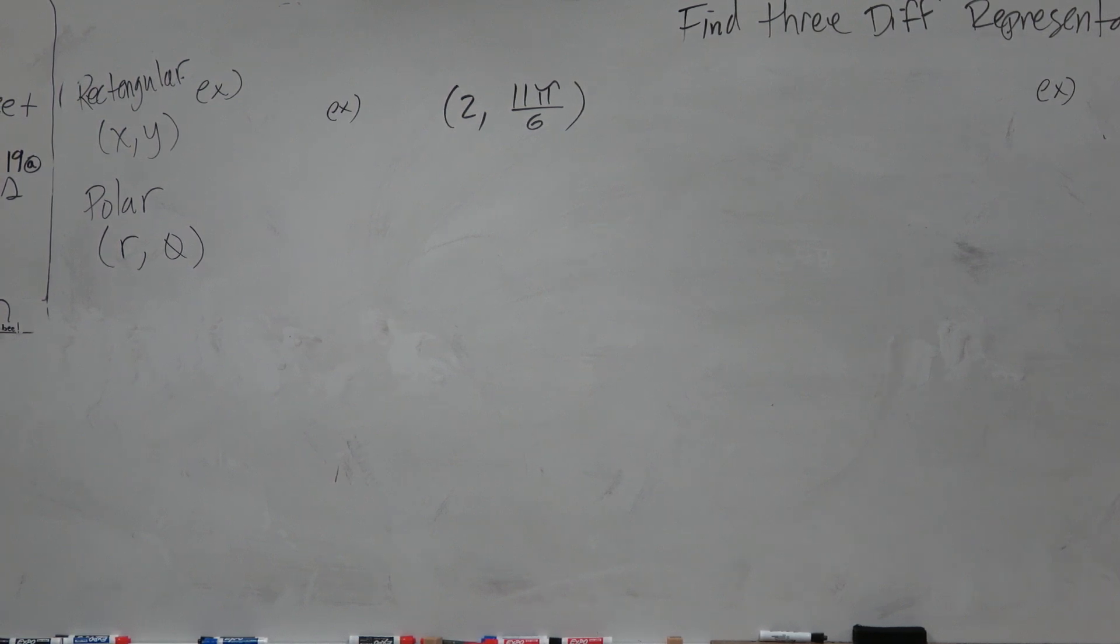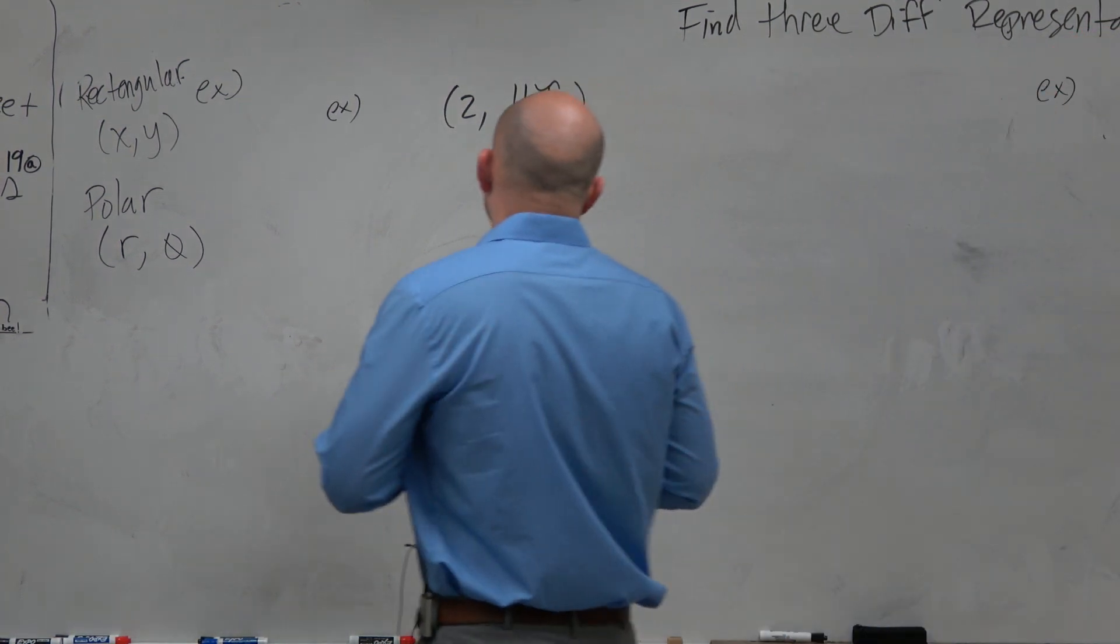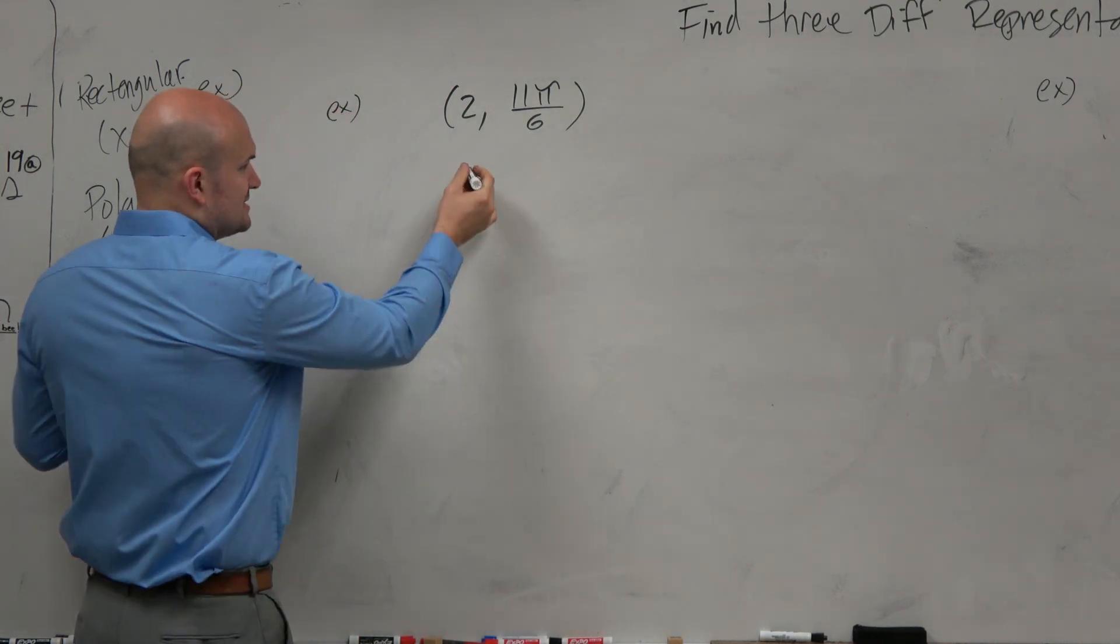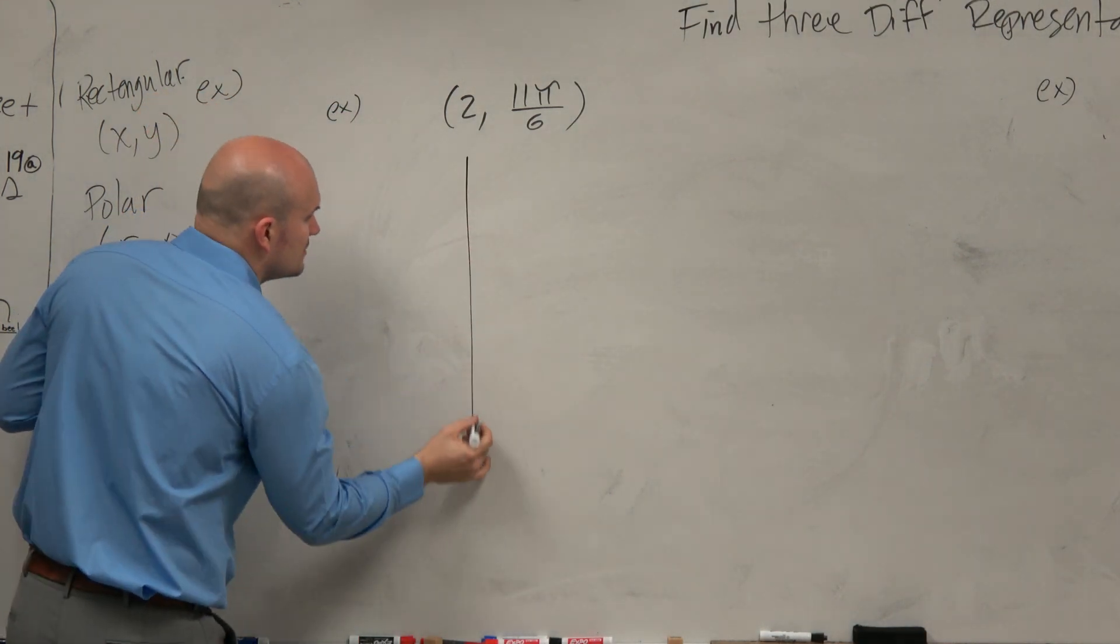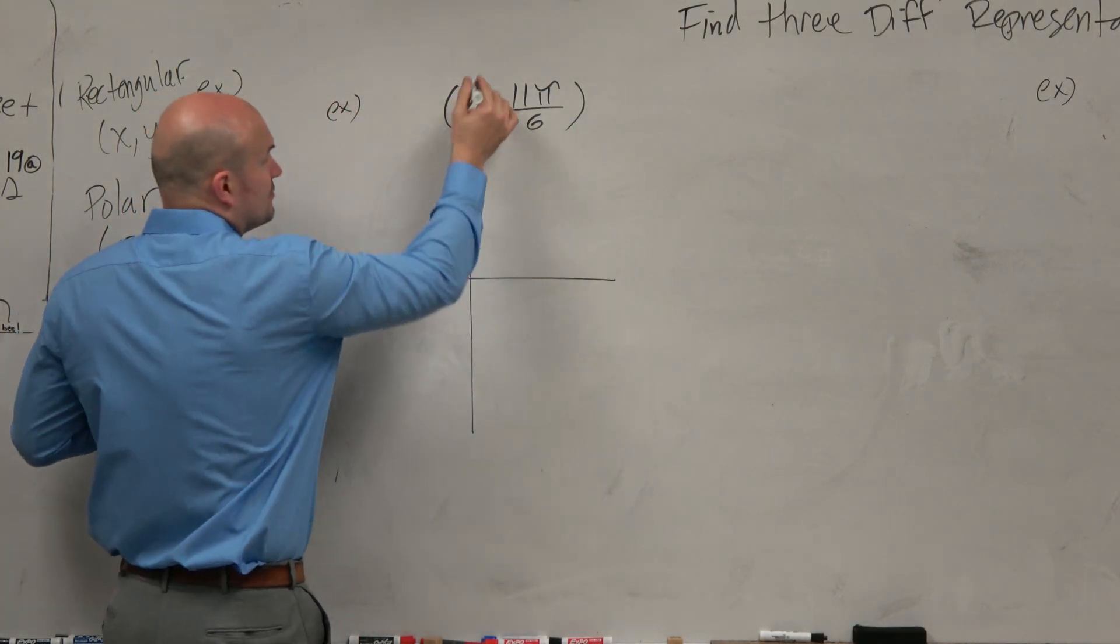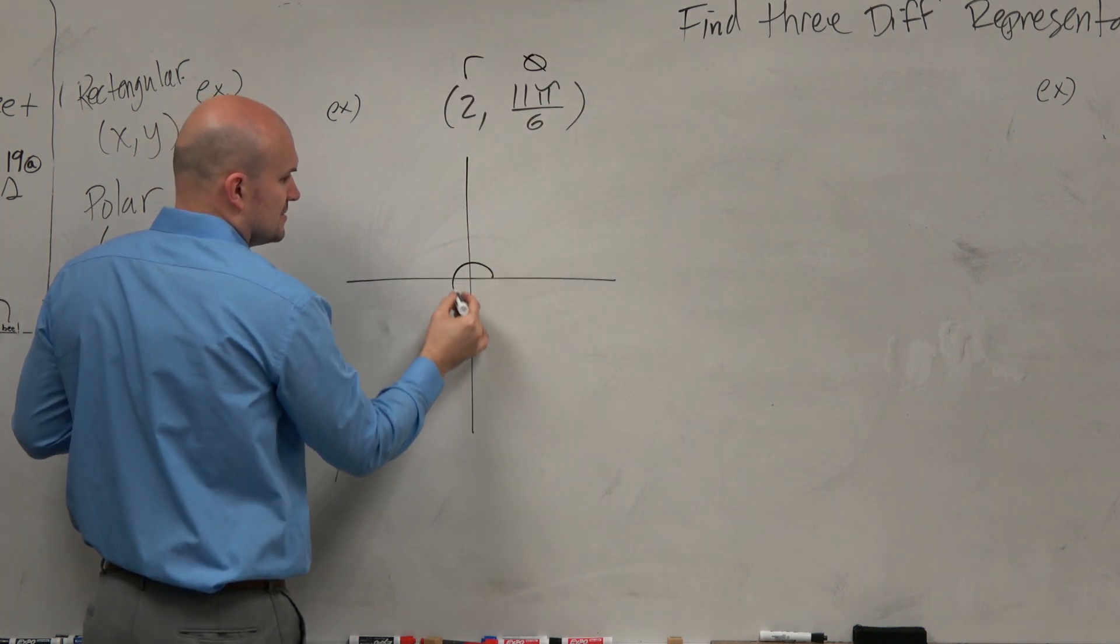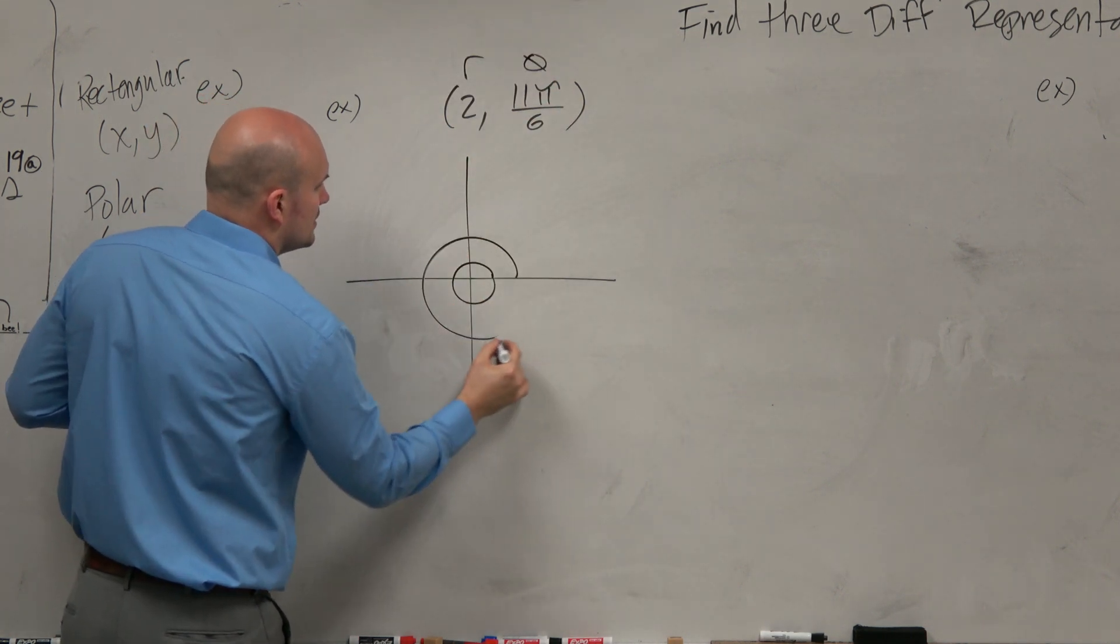So let's go and work on this one. Hopefully you guys recognize in this case this is going to have—hold on a second. Remember, this is your r and this is your theta. So we're going to have two rings. So one, two.